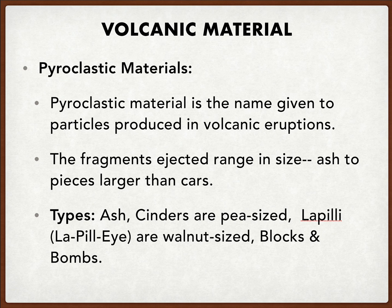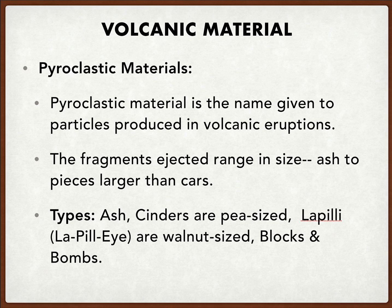What type of material do we also see? The main one is what we consider pyroclastic material — a name given to particles produced in volcanic eruptions. The size range can be from everything from a powder to items larger than a car. There's traditional ash, cinder, lapilli, and also blocks and bombs. Ash being the smallest, cinders are usually pea-sized, lapilli is more like the size of a quarter to walnut size, and then blocks and bombs are where they become significantly larger.